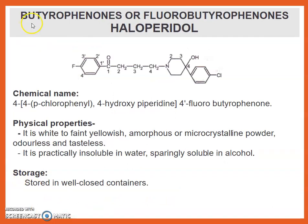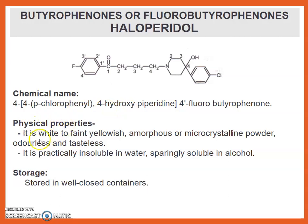Next drug is the Butyrophenone class, for example, Haloperidol. This is the structure of Haloperidol. Chemical name: 4-[4-(4-chlorophenyl)-4-hydroxypiperidino]-4'-fluorobutyrophenone. Physical property: it is a white to yellowish amorphous or microcrystalline powder, odorless and tasteless, and practically insoluble in water and sparingly soluble in alcohol.